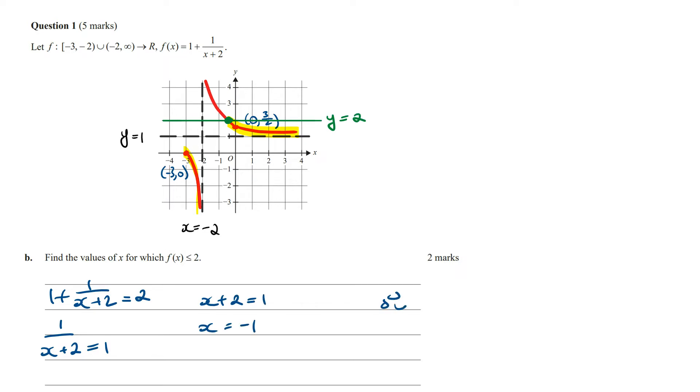Therefore the x values for which f(x) is going to be less than or equal to 2 is going to be for the values of x where x is in the bottom region from -3 inclusive to -2 non-inclusive, or from -1 inclusive to infinity. And that's it for this question.